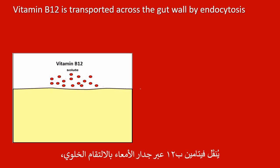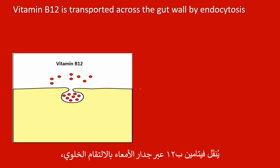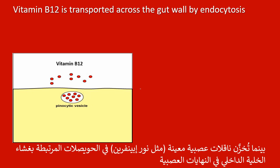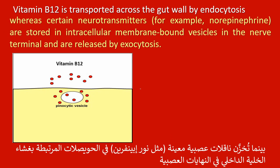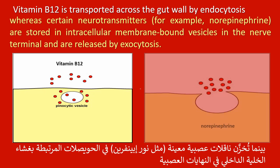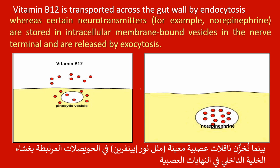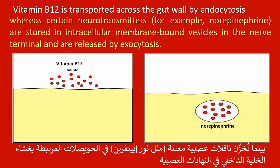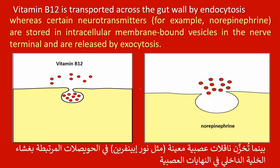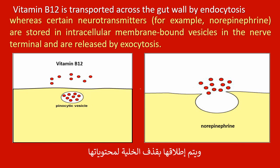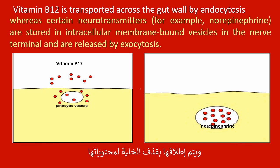Vitamin B12 is transported across the gut wall by endocytosis, whereas certain neurotransmitters — for example norepinephrine — are stored in intracellular membrane-bound vesicles in the nerve terminal and are released by exocytosis.